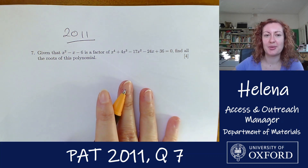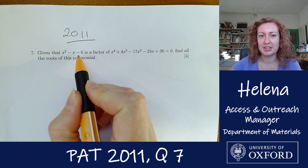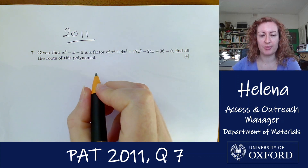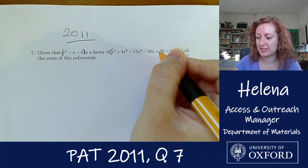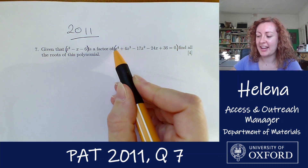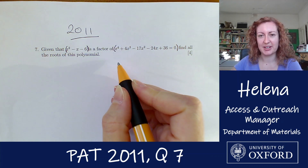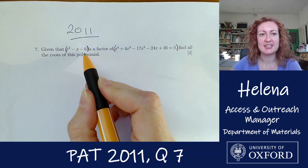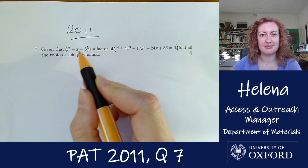In this question we are given a polynomial and we are told that a quadratic equation is a factor of this polynomial, and we want to find all of the roots. This polynomial has a highest power of x to the four, so we're going to be finding four roots. We know two can be found from the given quadratic factor.